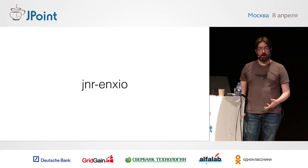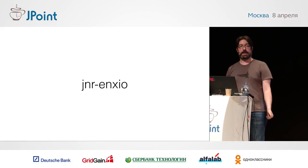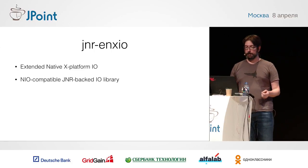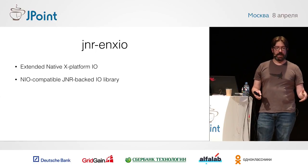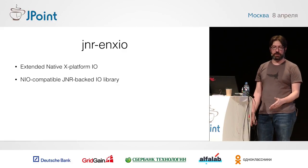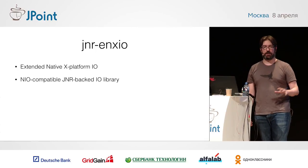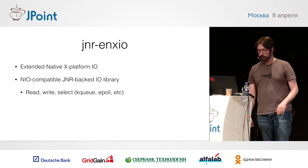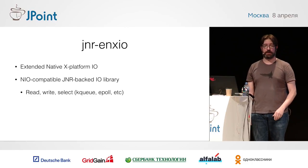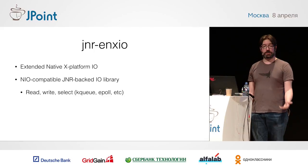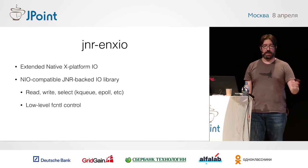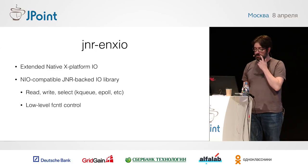Building on top of JNR POSIX and JNR-FFI, we have ENXIO — Extended Native Cross-Platform IO. This is basically NIO channels, an NIO-compatible library that uses all native C calls. It behaves the way a C program would need to, but provides you an NIO channel that looks like any other IO object on the JVM. For example, we can do things like select on standard IO, and we can have selectable channels for a subprocess — things you just can't do on the JVM normally. We also have full access to file control flags.